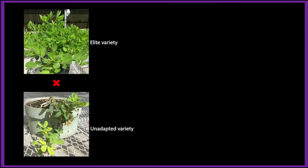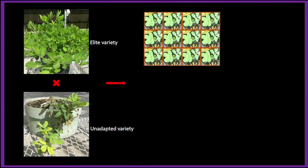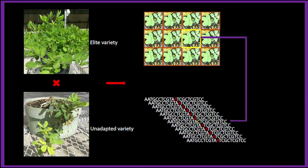Once the two varieties have been crossed, their progeny may not be different phenotypically in the absence of disease pressure. However, genetically, one seedling may have the target SNP associated with resistance, as shown here. This SNP can be exploited to select a disease-resistant plant at the seedling stage. Such a procedure is known as a genotyping experiment.